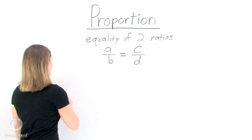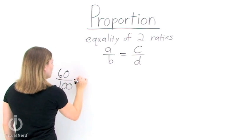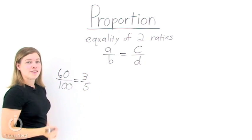So let's look at some examples of proportions. 60 over 100 equals 3 over 5. That's a proportion.